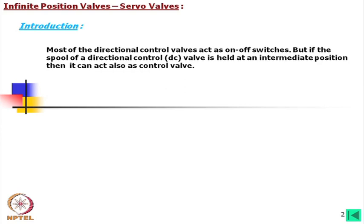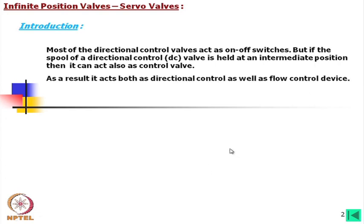Most directional control valves act as on/off switches, but if the spool of a directional control valve — also called a DC valve — is held at an intermediate position, then it can act as a control valve, meaning infinite position control. On/off is just 1 or 0; intermediate positions allow control of both flow and pressure. As a result, it acts both as a directional control and as a flow control device.